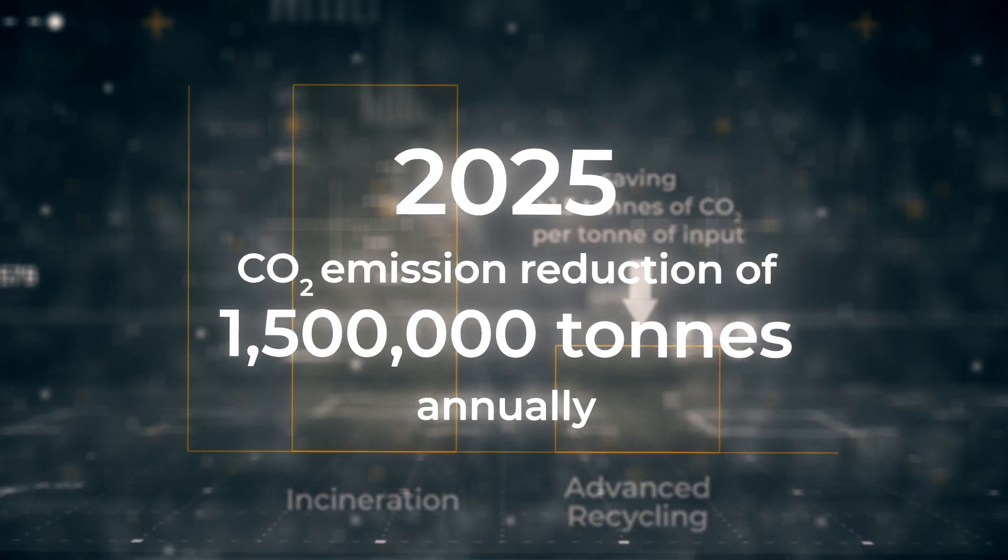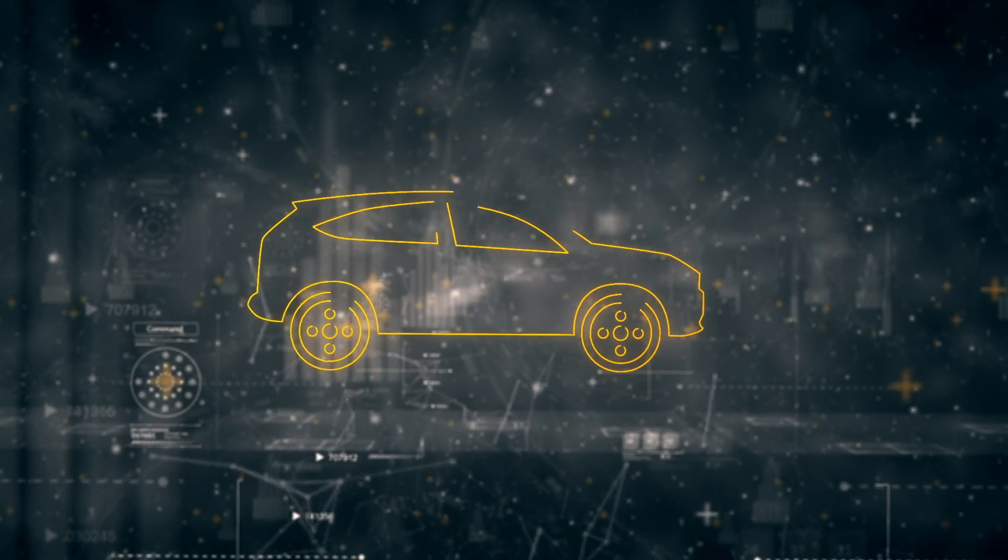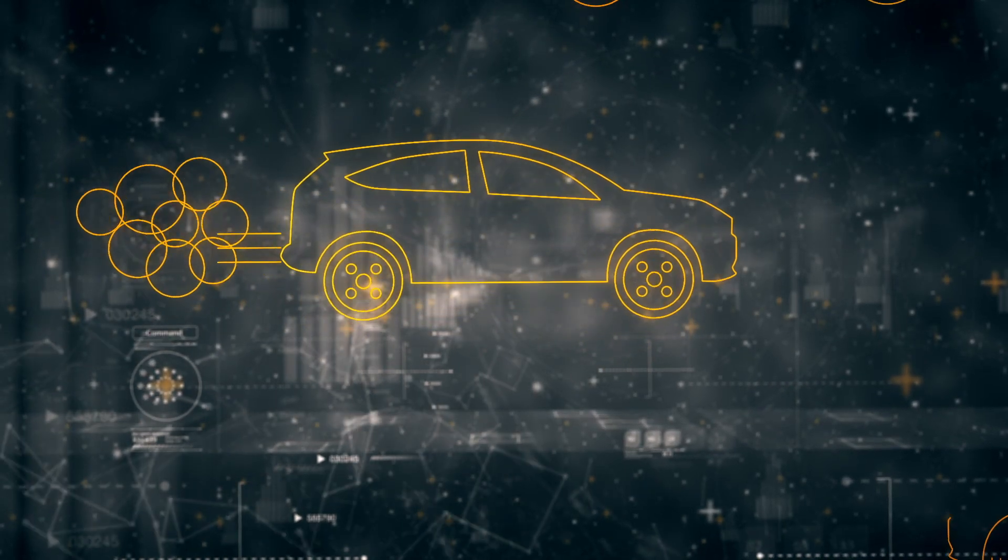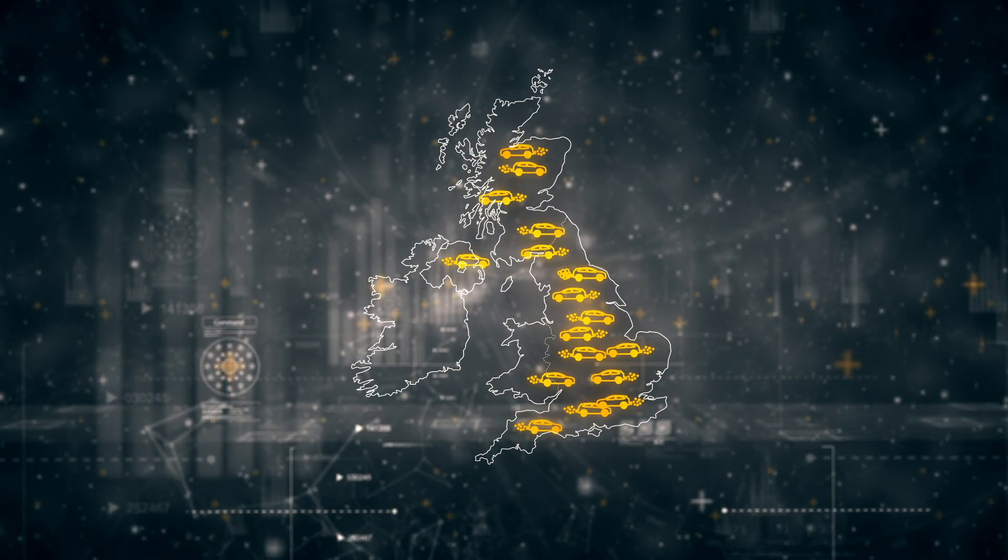To put this into perspective, a 1.5 million tonnes CO2 saving is the equivalent of removing approximately 660,000 cars off the UK's roads every year.